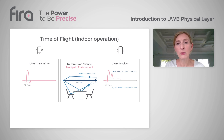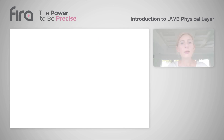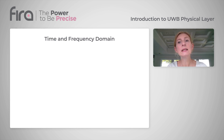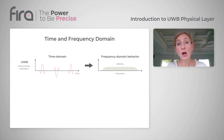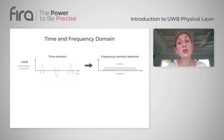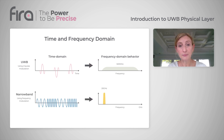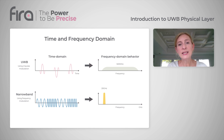The short time domain pulses translate in the frequency domain into ultra-wideband spectrum. UWB operates on a channel size of 500 megahertz, which is a much larger spectrum than narrowband technologies such as Wi-Fi. Since the RF energy is spread over such a large spectrum,